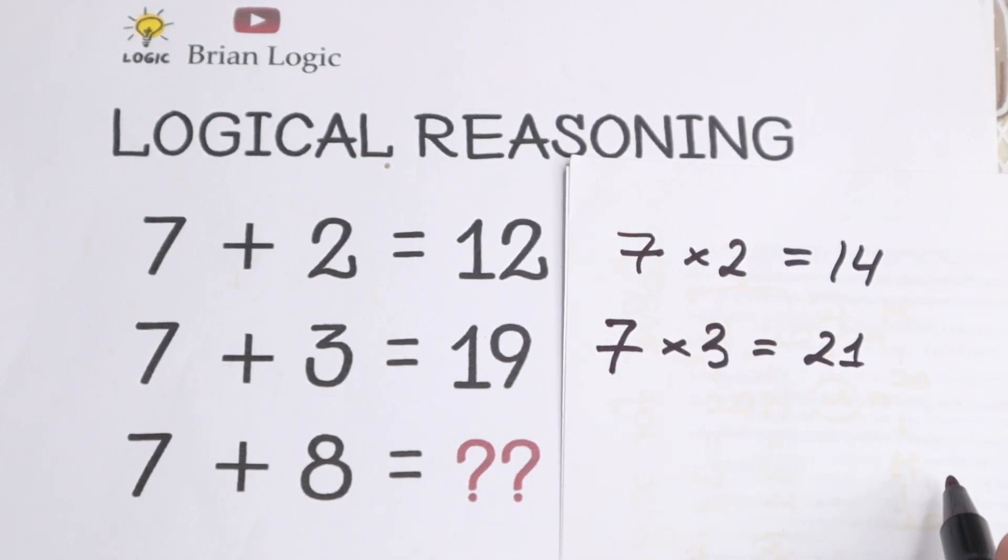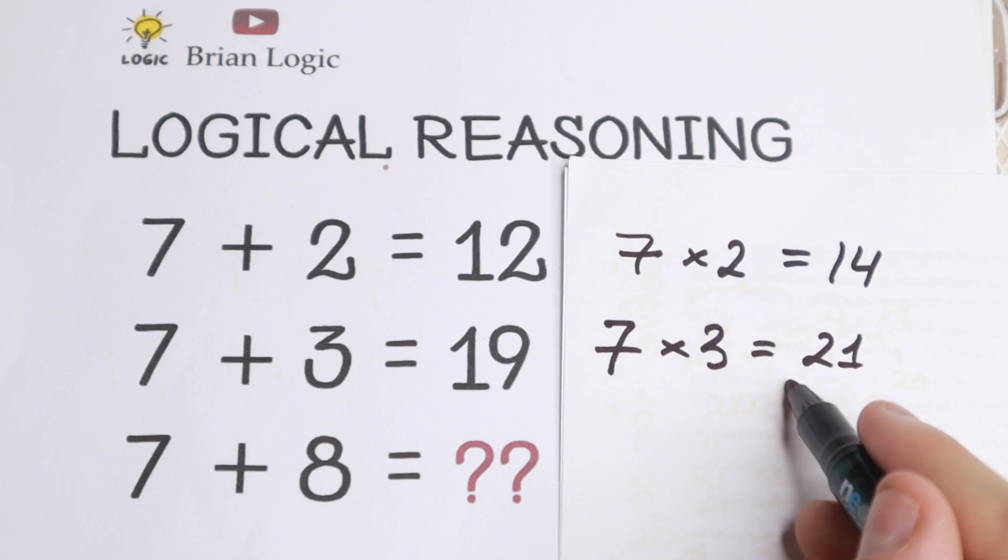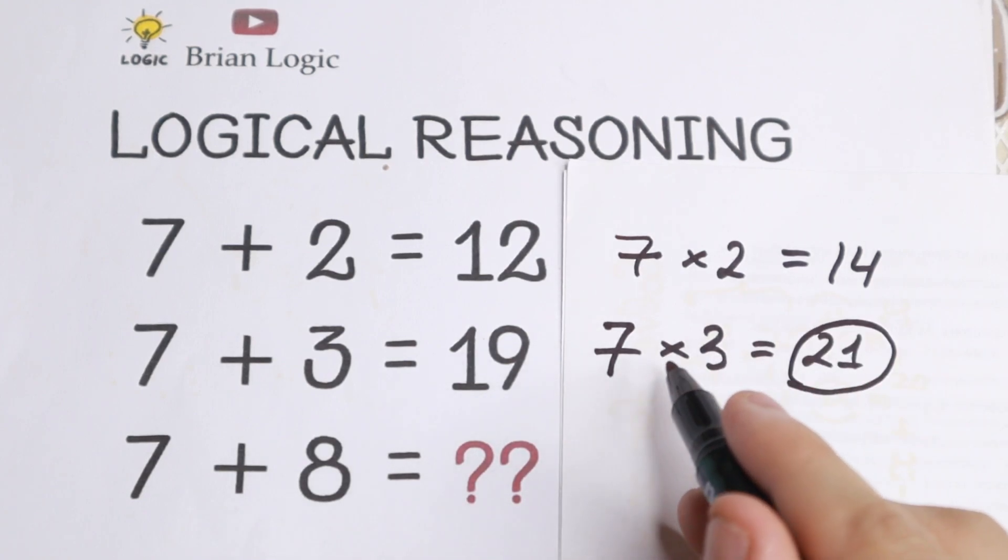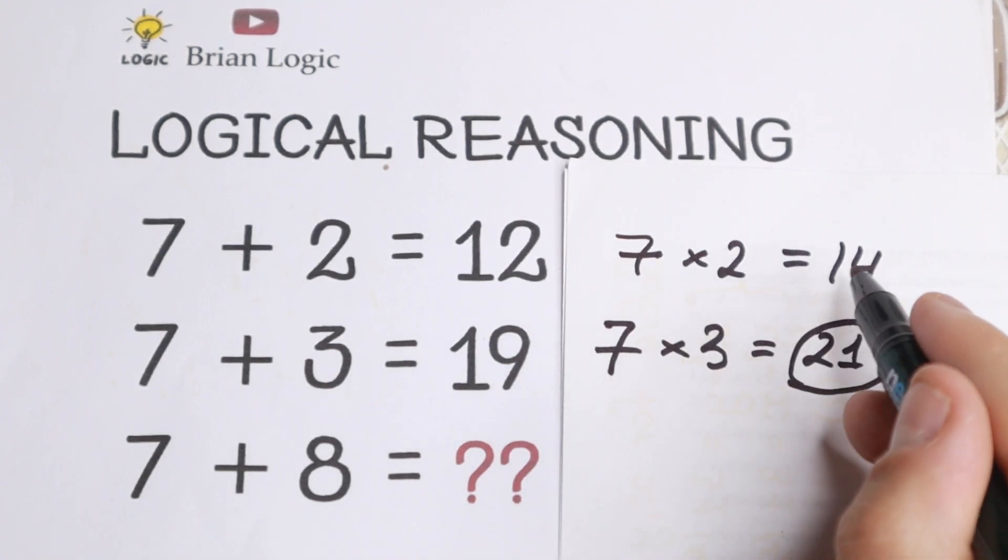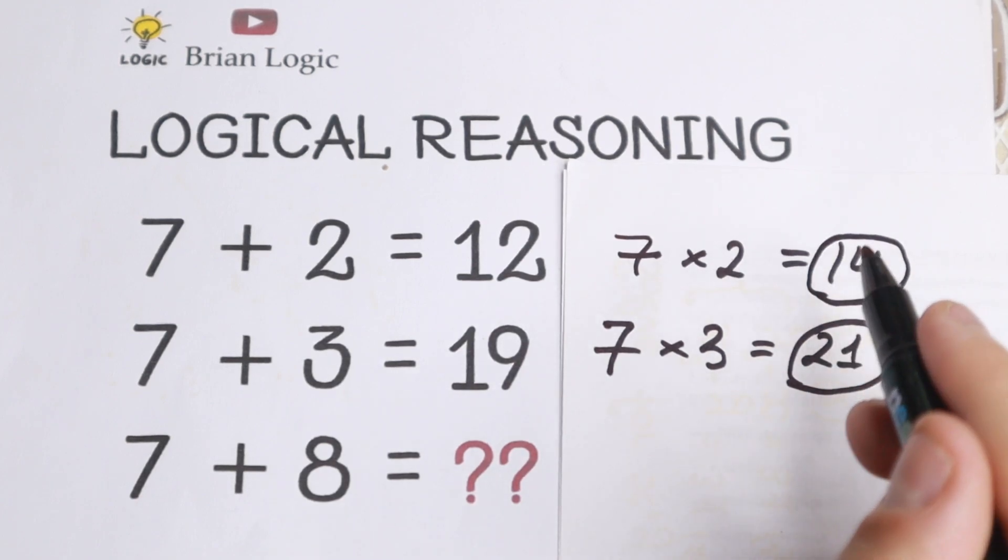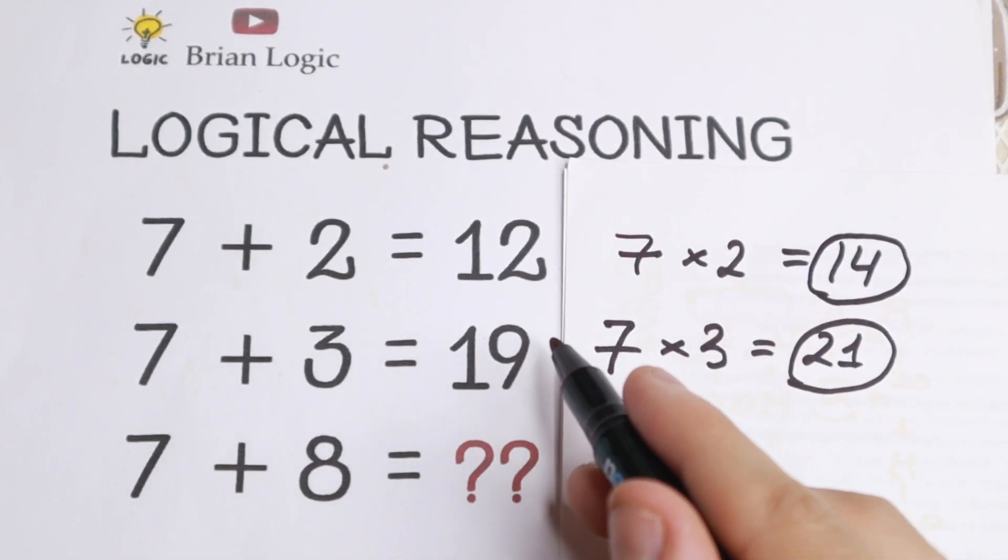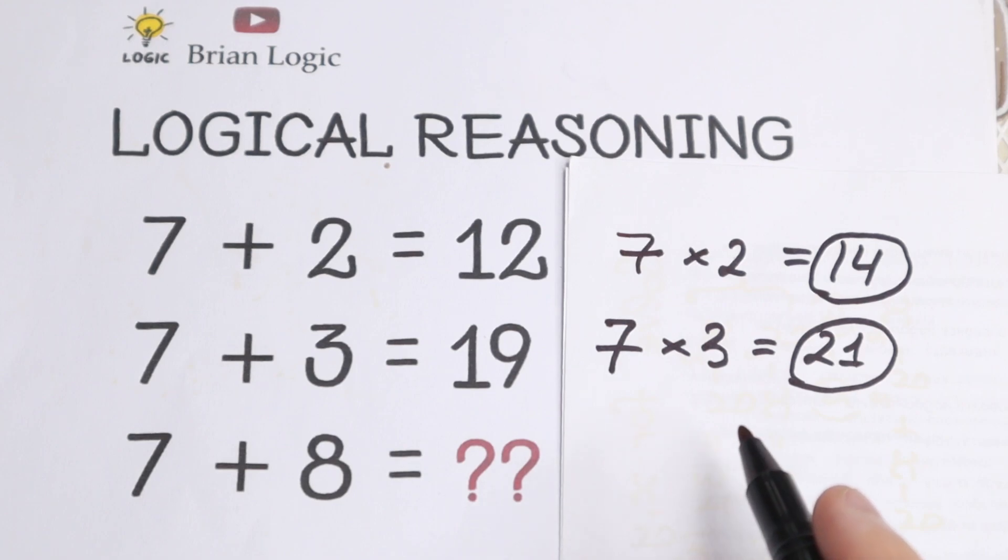And I want to mention one really interesting moment, because right here if we change addition by multiplication, we will have two numbers 14 and 21, and right here we have 12 and 19. So what is the pattern between these numbers? What is the difference between all of these numbers?